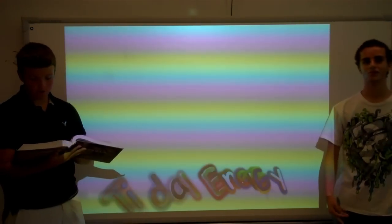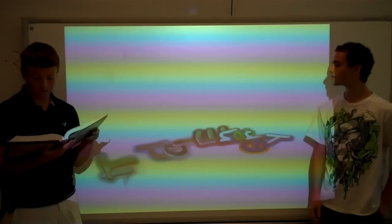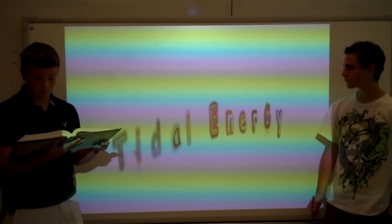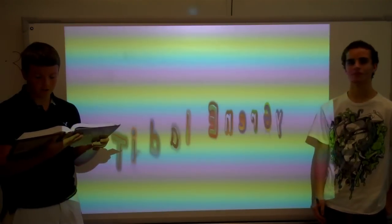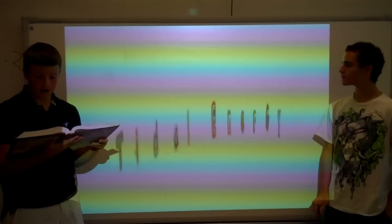Electrical energy is produced as the water flows back and forth between the basin and the sea. The amount of natural energy produced depends on the volume of the basin and the tidal range, the vertical distance between high and low tides.